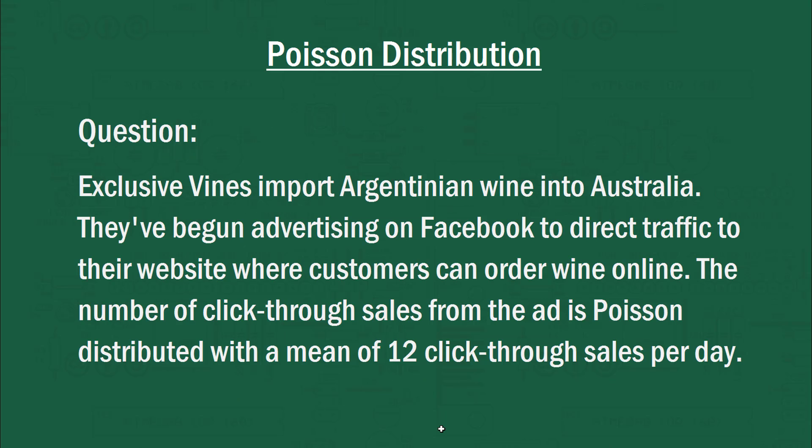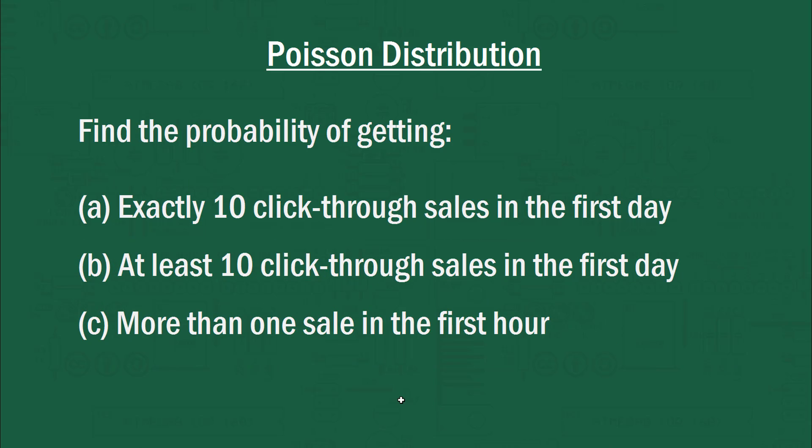All right. So it's time for you to do a question. Let's give this a read. Exclusive vines import Argentinian wine into Australia. And they've begun advertising on Facebook to direct traffic to their website where customers can order wine online. The number of click-through sales from the ad is poisson distributed with a mean of 12 click-through sales per day. Okay, so we've got a mean of 12. That will be our lambda value. Now, I've got three questions for you. And I'm hoping that you can pause the video here and give these a go and then see if we get the same answer.